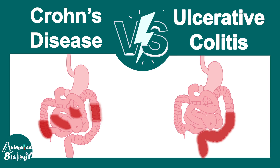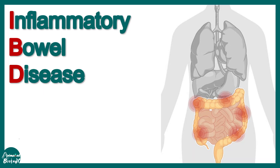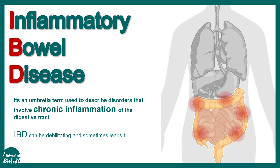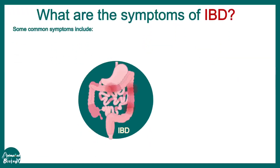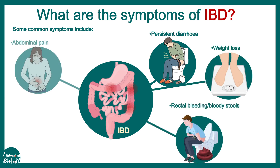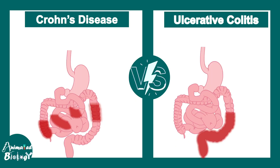In this video we'll talk about the differences between Crohn's disease and ulcerative colitis, and we'll try to understand the overall pathological basis of these two diseases. Both of them are actually inflammatory bowel diseases — IBD is an umbrella term used to describe disorders in the gut which involve chronic inflammation. IBD could be life-threatening as well. Generally, IBD is associated with persistent diarrhea, rectal bleeding, weight loss, abdominal pain, and fatigue.